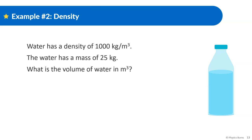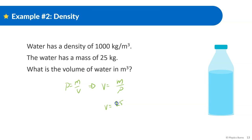Next problem: water has a density of 1,000 kilograms per meter cubed and the water has a mass of 25 kilograms. What is the volume of the water in meter cubed? Density equals mass divided by volume, and now we're looking for volume, so volume equals mass divided by density. Mass is 25, density is 1,000 — put that into a calculator and we get volume equals 0.025 meter cubed.